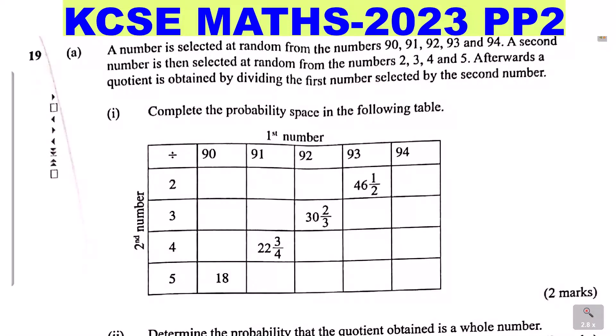Question 19, Part A. A number is selected at random from the numbers 90, 91, 92, 93, and 94. A second number is then selected at random from the numbers 2, 3, 4, and 5. Afterwards, a quotient is obtained by dividing the first number selected by the second number. Part 1: Complete the probability space in the following table.